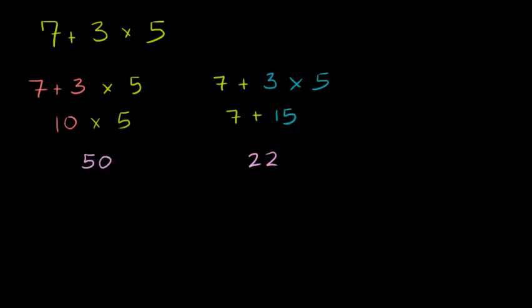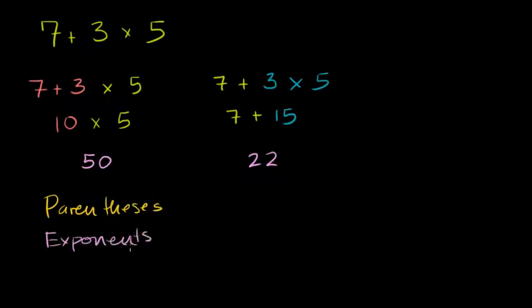The agreed-upon order of operations is: do parentheses first, then do exponents — if you don't know what exponents are, don't worry about it right now, and we won't have any exponents in our examples. Then you do multiplication and division next — they have the same level of priority. And then finally you do addition and subtraction.